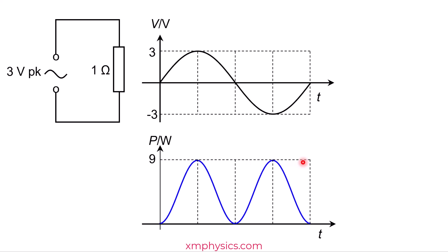So the peak power dissipation is 9 watts coming from the peak voltage of 3 squared divided by 1 ohm. And this peak power occurs only at two time instances here. But because of the sinusoidal waveform, it's obvious that the average power dissipation is 4.5 watts, right at the middle between 0 watts and 9 watts. So the average power dissipation is actually half of the peak power dissipation.